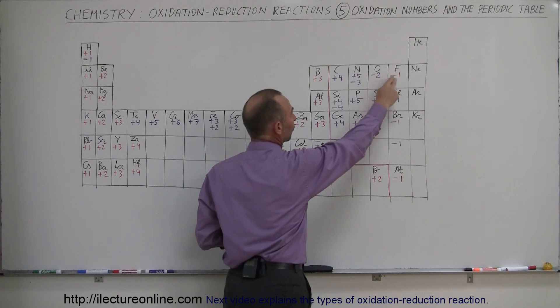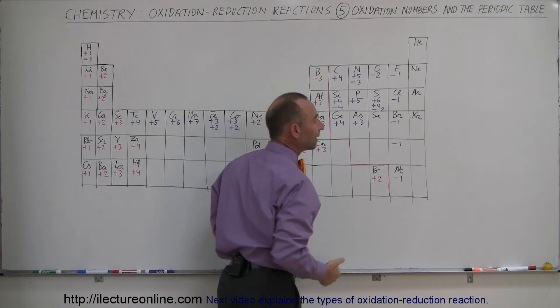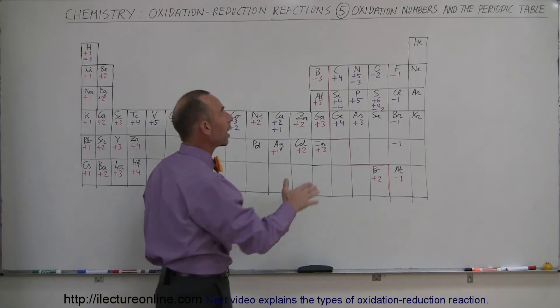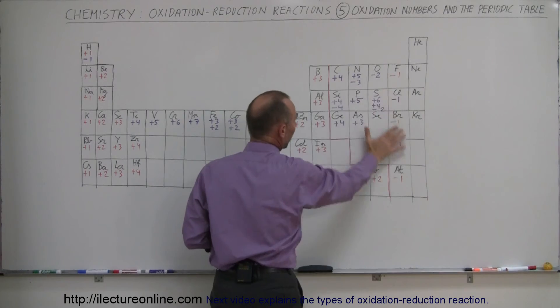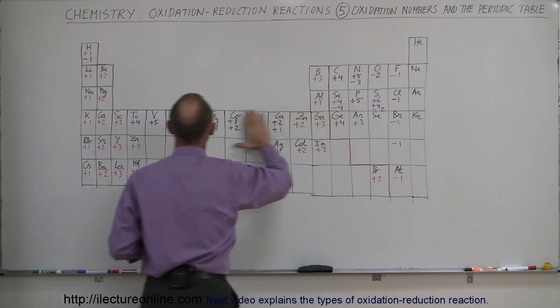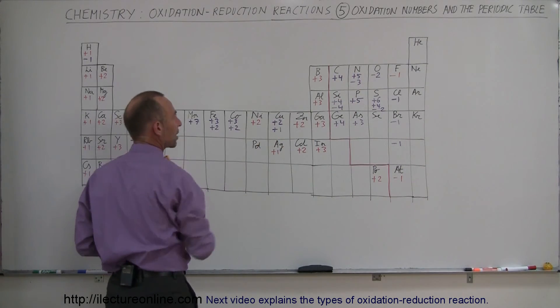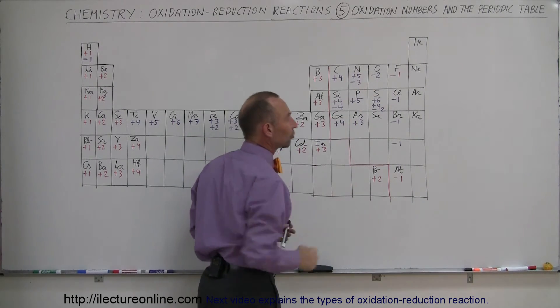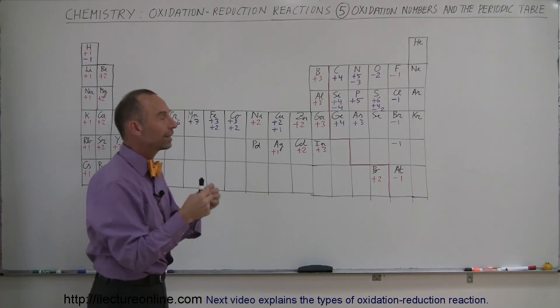And then over here we have the elements that can be both reducing or oxidation elements. So in other words, oxygen, fluorine, chlorine, and bromine, their most likely state is that they will accept electrons, and so they're most likely oxidizers. So you'll find most of your oxidizers over here, and all of your reducers over here. And then you can see that there's a combination that they can be either oxidizer or reducer, depending upon what they combine with.